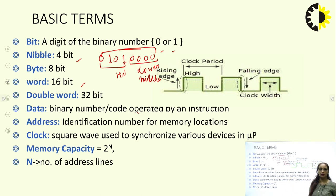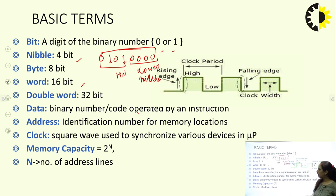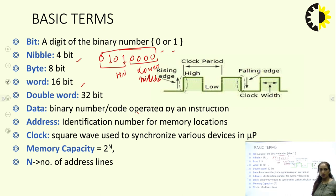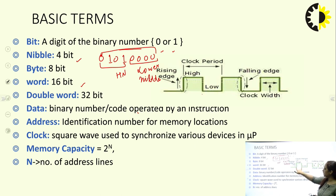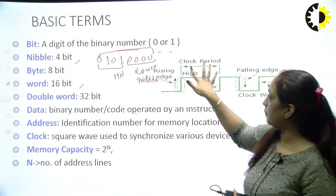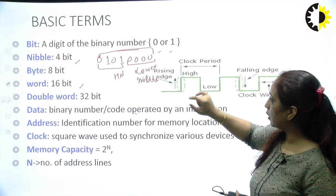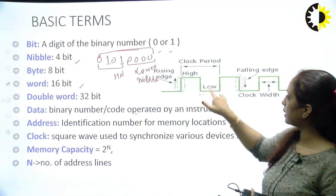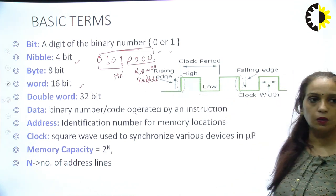A combination of 8 bits is known as 1 byte. A word is 16 bits, and a double word is 32 bits. Data refers to a binary number or code operated upon by an instruction. Address is the identification number of a memory location. The clock synchronizes all operations in the microprocessor — it is a square wave with a 50% duty cycle, high for 50% and low for 50%, and one complete cycle is known as one clock period.